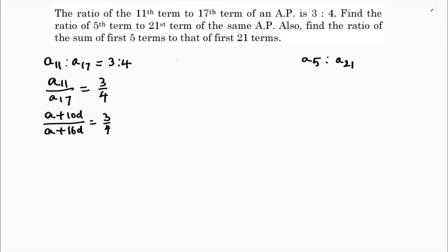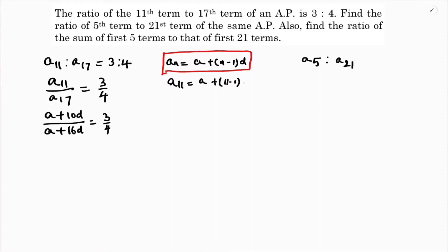By using the nth term formula, an equals a plus n minus 1 into d. So here, a11 is written as a plus 11 minus 1 into d, which is nothing but a plus 10d. In the same way, a17 is a plus 17 minus 1 times d, which is a plus 16d. So in this way I got a11 and a17.